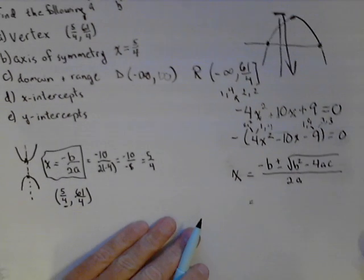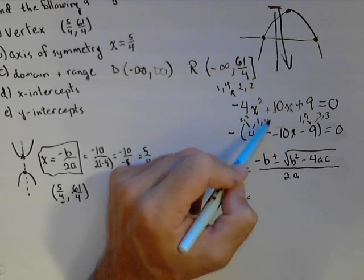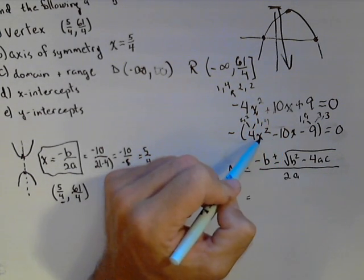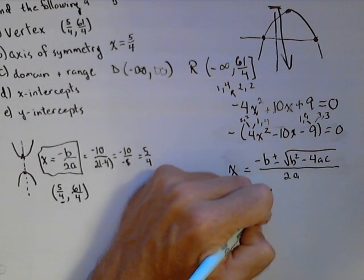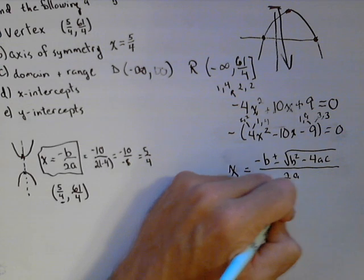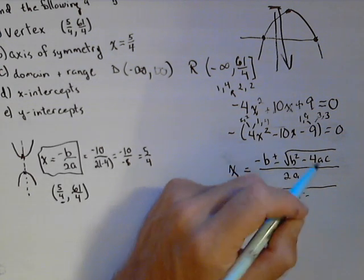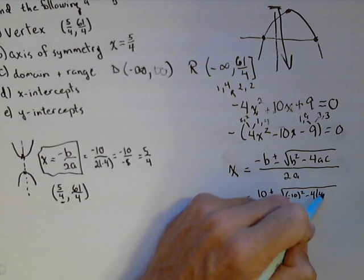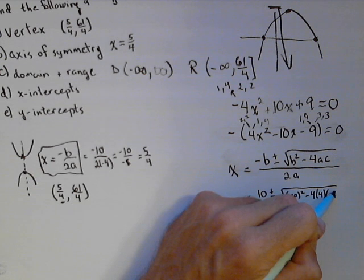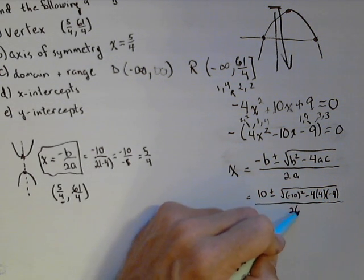And for our problem, we can use either version. Let's go ahead and use our one with the negative factored out. So, 10 plus or minus square root of negative 10 squared minus 4 times 4 times negative 9, all over 2 times 4.